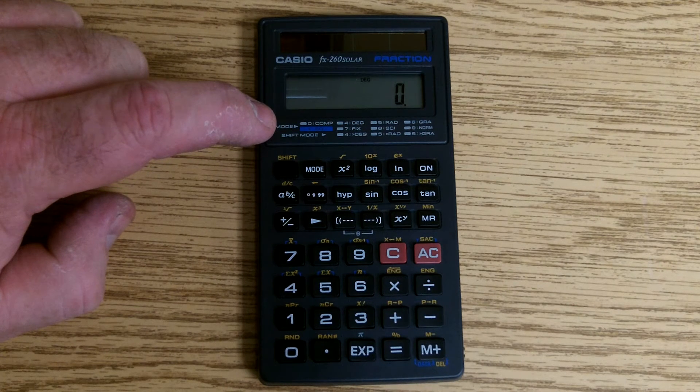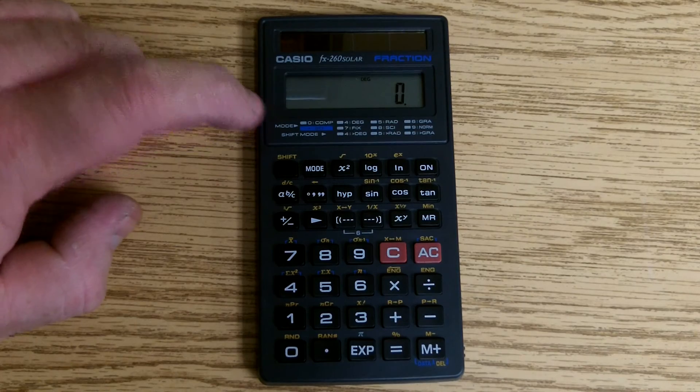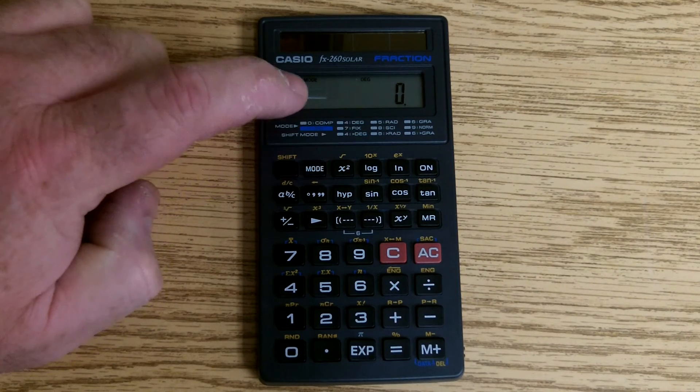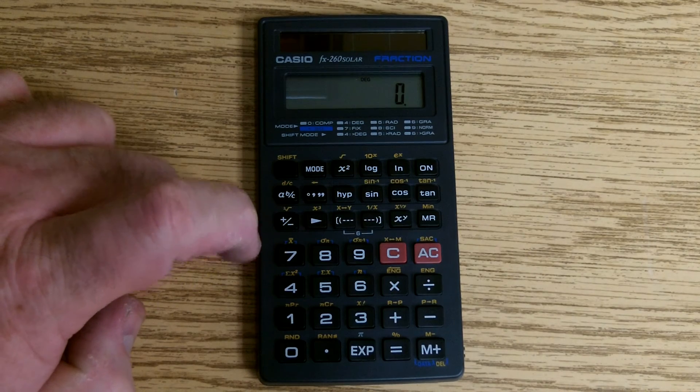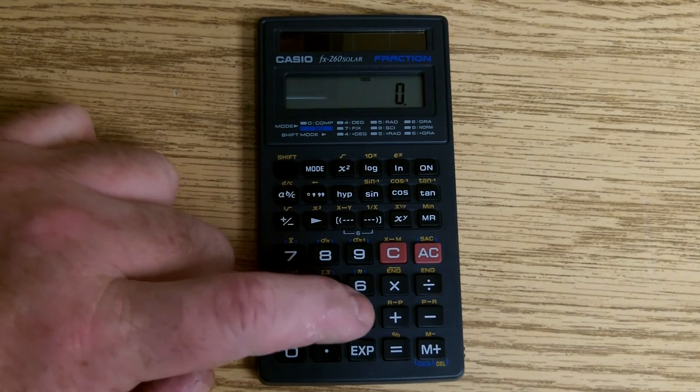So if we wanted all of our answers to come out to three decimal places, we would hit mode—you notice the word mode comes up on the screen—7, and then we will enter the number of decimal places we want, which would be 3.